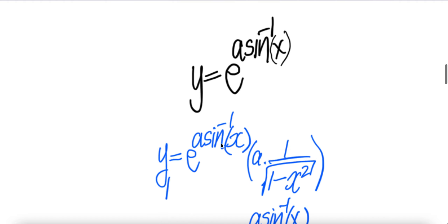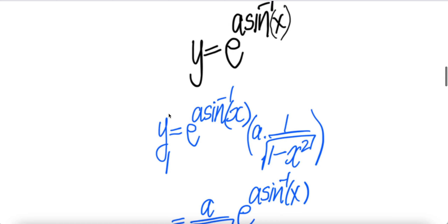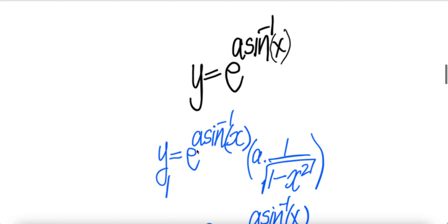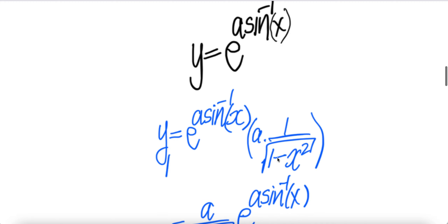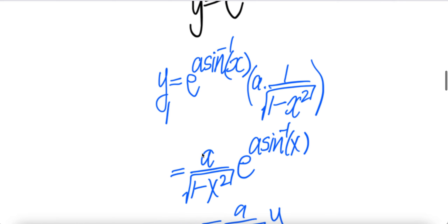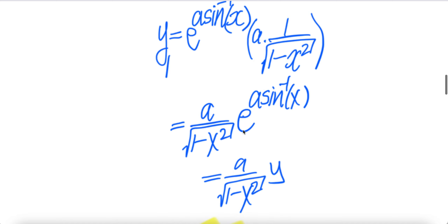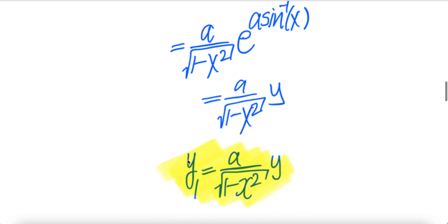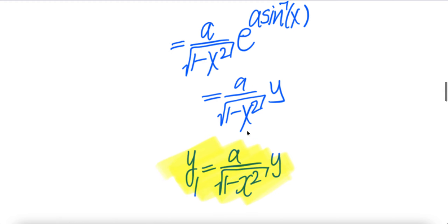We are given this, so let us take the first derivative. Taking the derivative with respect to x on the left-hand side, y subscript 1 equals the derivative of e to the power a arc sine x, which is e to the power a arc sine x times a over the square root of 1 minus x squared. Notice that the e to the power a arc sine x piece is y, so we can replace it. Therefore y₁ equals ay divided by the square root of 1 minus x squared.